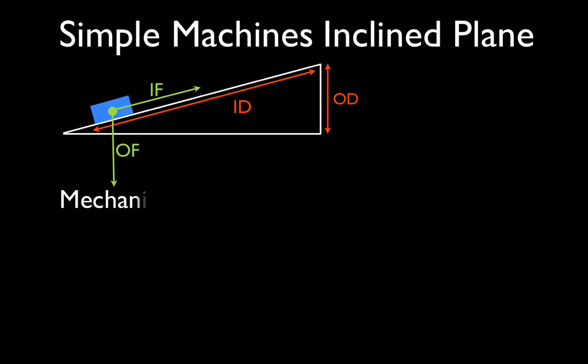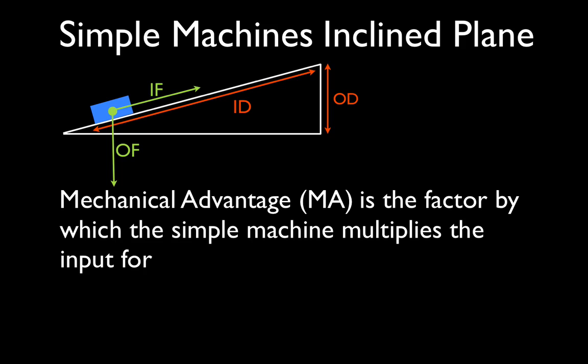Now, what is the mechanical advantage? The mechanical advantage is simply the factor by which the simple machine multiplies the input force. I think that is possibly the best definition I could find. There are some other definitions, but it's the factor by which the simple machine multiplies the input force.